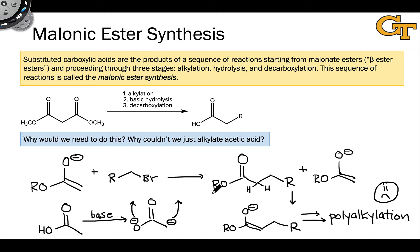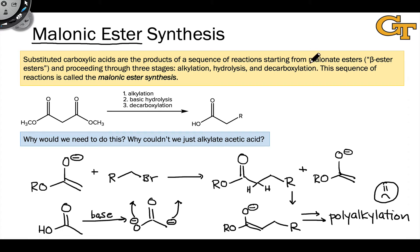All of these problems indicate that we need a more deliberate approach for the synthesis of substituted esters or carboxylic acids. The malonic ester synthesis, much like the acetoacetic ester synthesis, is designed to furnish substituted carboxylic acids through a series of deliberate reactions. We start with a compound that contains two ester groups sharing a common saturated carbon between them — these are referred to as malonate or malonic esters, and they're beta-ester esters.